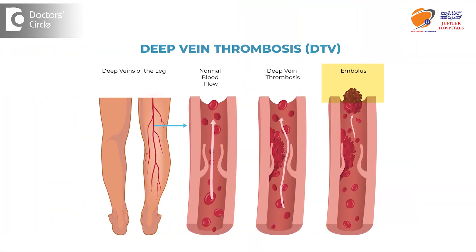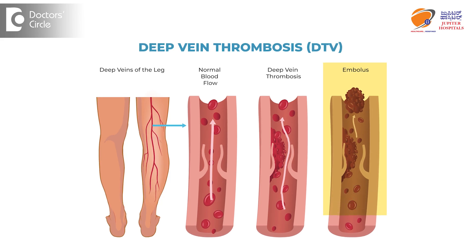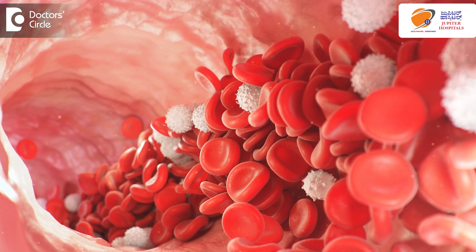So what happens in DVT? When there is a clot in the deep veins, the entire leg swells — there is a huge swelling of the leg. This can be found out by color Doppler easily. How we can treat DVT is to identify it very early, as early as possible, and then give injections called anticoagulants. When these injections are given, the clot which is formed in the veins dissolves and a route is formed for the flow of blood.